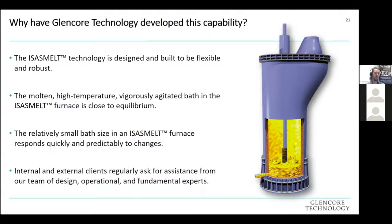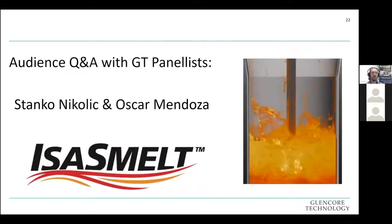The molten, high-temperature and very well-agitated bath in the IsaMelt furnace is close to equilibrium, so we can use equilibrium as a very close estimate of what's happening in the furnace. The IsaMelt has a small bath and responds very quickly and predictably to changes — if you make a mistake, you can repair it quicker too. It's quite easy to see the effects of changes and confirm what you're predicting with MPE or other software models.